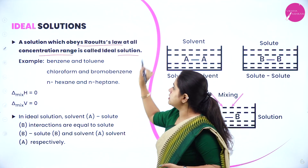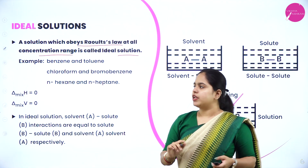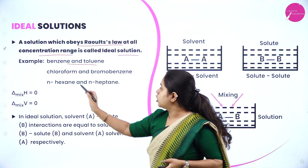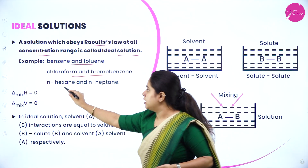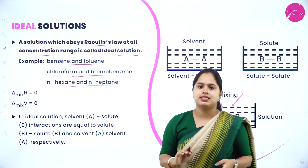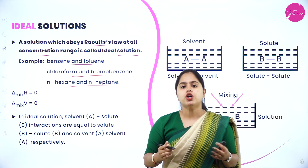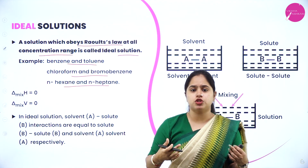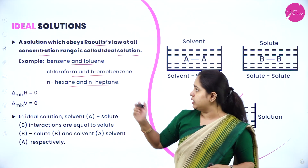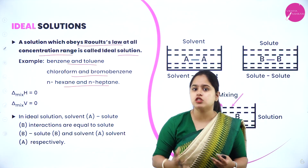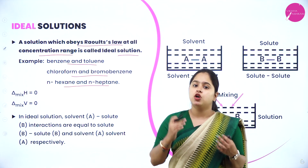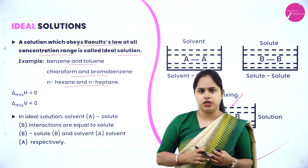Such solutions are called ideal solutions. Examples include benzene and toluene, chloroform and bromobenzene, and n-hexane and n-heptane. There are no solutions which are exactly ideal, but these are examples which almost behave as ideal solutions.